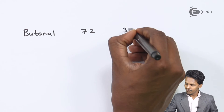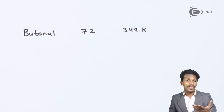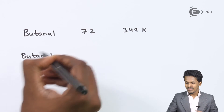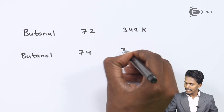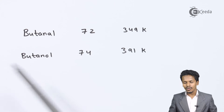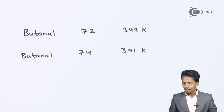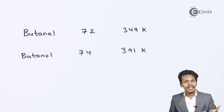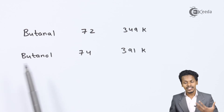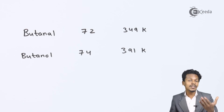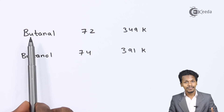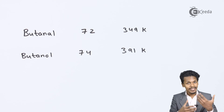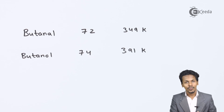For example, consider butanal, which is an aldehyde with a molecular mass of 72 — its boiling point is 349 K. Butanol has a molecular mass of 74 and a boiling point of 391 K. With similar carbon content, butanol has a higher boiling point because alcohols form stronger hydrogen bonding compared to aldehydes and ketones.